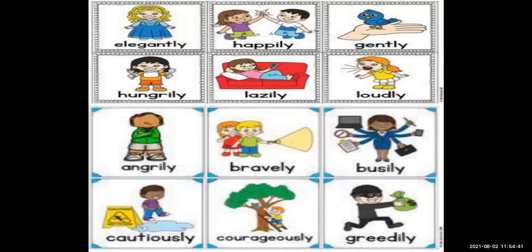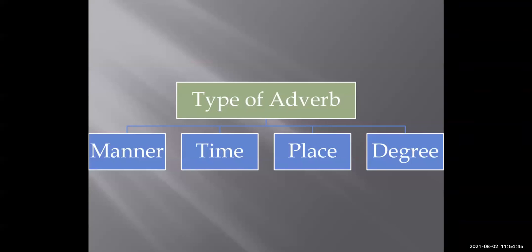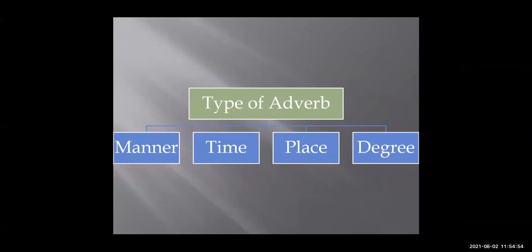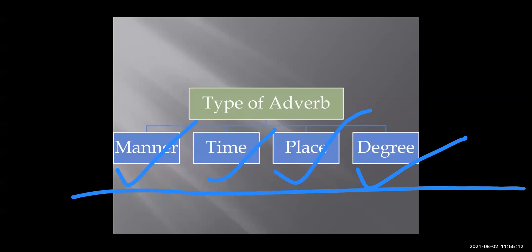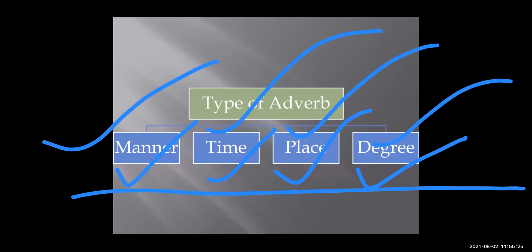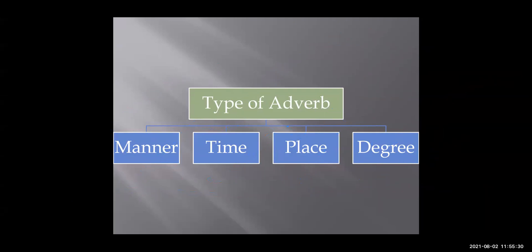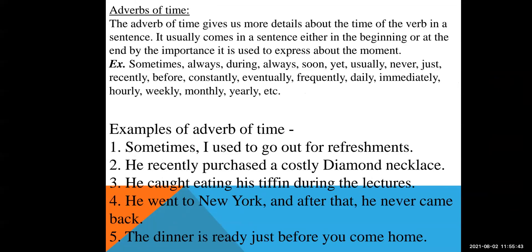This we have learned in our previous standard. Now this year we are going to learn about the types of adverb. The word which indicates time, manner, place, or degree — these are the four types of adverb: adverb of manner, adverb of time, adverb of place, and adverb of degree. Students, just repeat behind me: adverb of manner, adverb of time, adverb of place, adverb of degree.